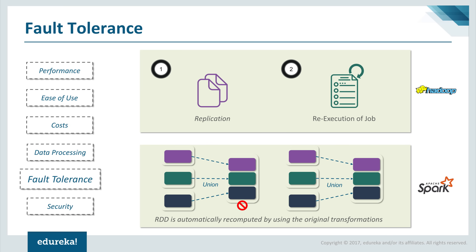For Spark, RDDs (Resilient Distributed Datasets) are the building blocks of Apache Spark and are what provide fault tolerance. They can reference any dataset in an external storage system like HDFS, HBase, or a shared file system, and can be operated in parallel. RDDs can persist a dataset in memory across operations, making future actions ten times faster. If an RDD is lost, it will automatically get recomputed using the original transformations — this is how Spark provides fault tolerance.